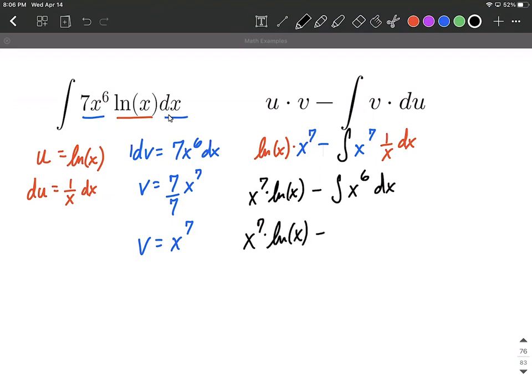And now we still need to integrate this. So bringing that first part along, subtracting, we're going to integrate by increasing the exponent by 1 and dividing by our new exponent. And then at the end, because this is an indefinite integral, we want to include a plus C.